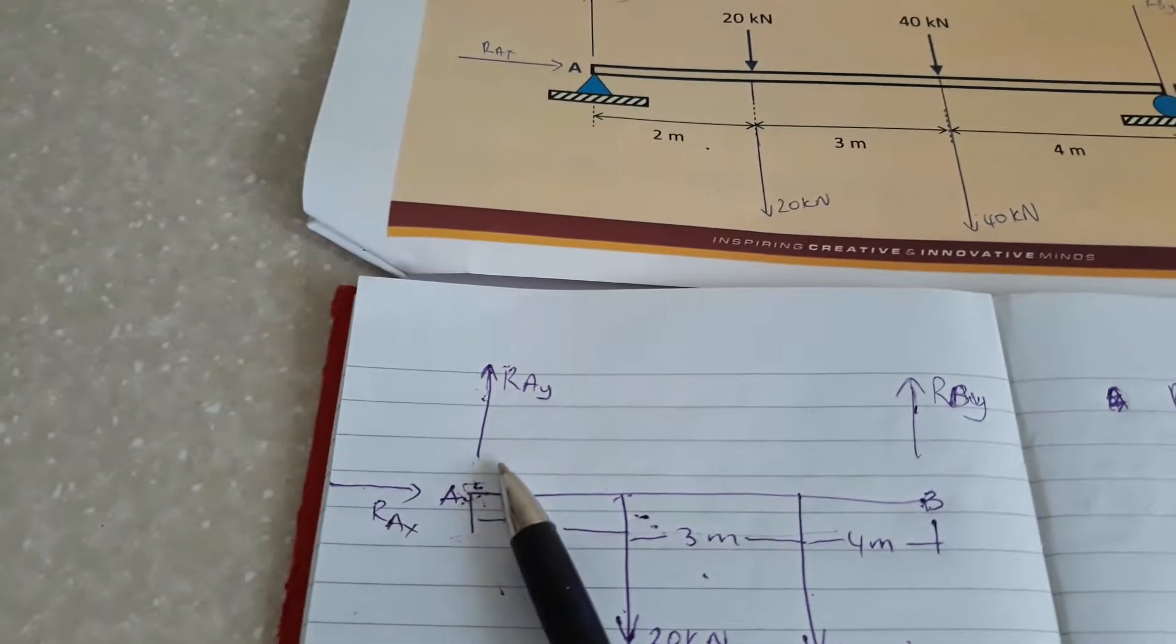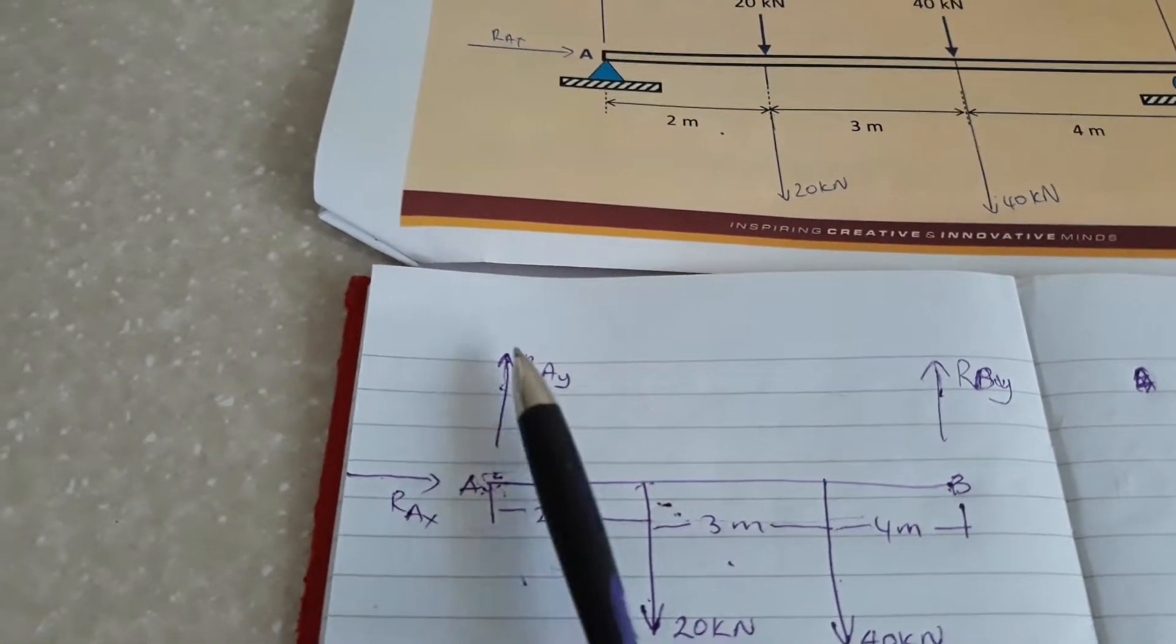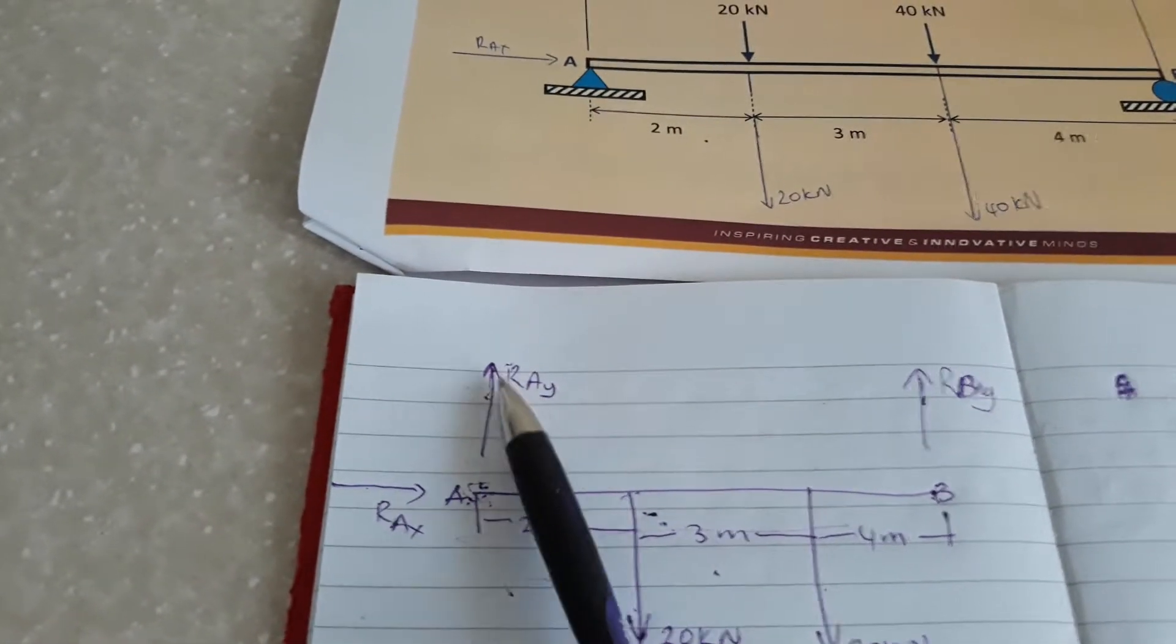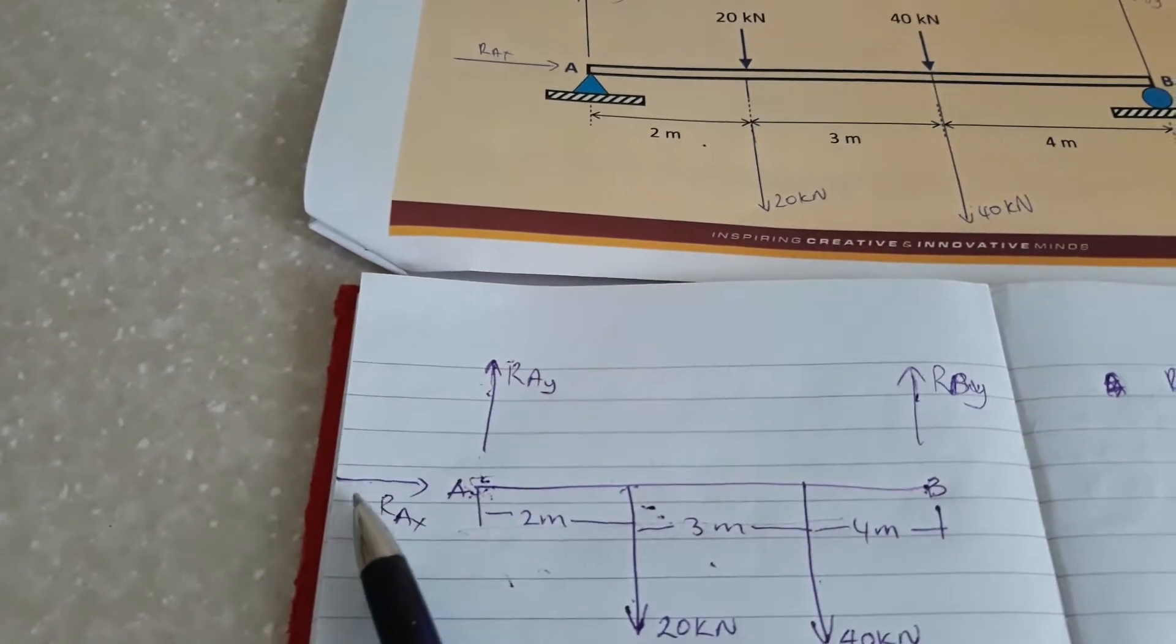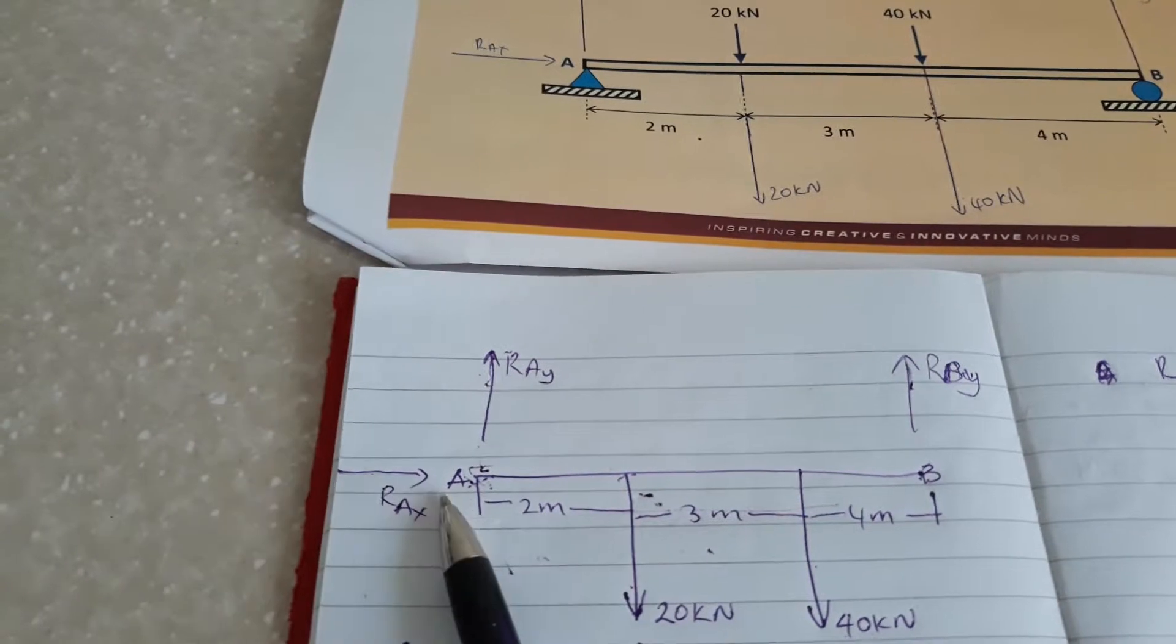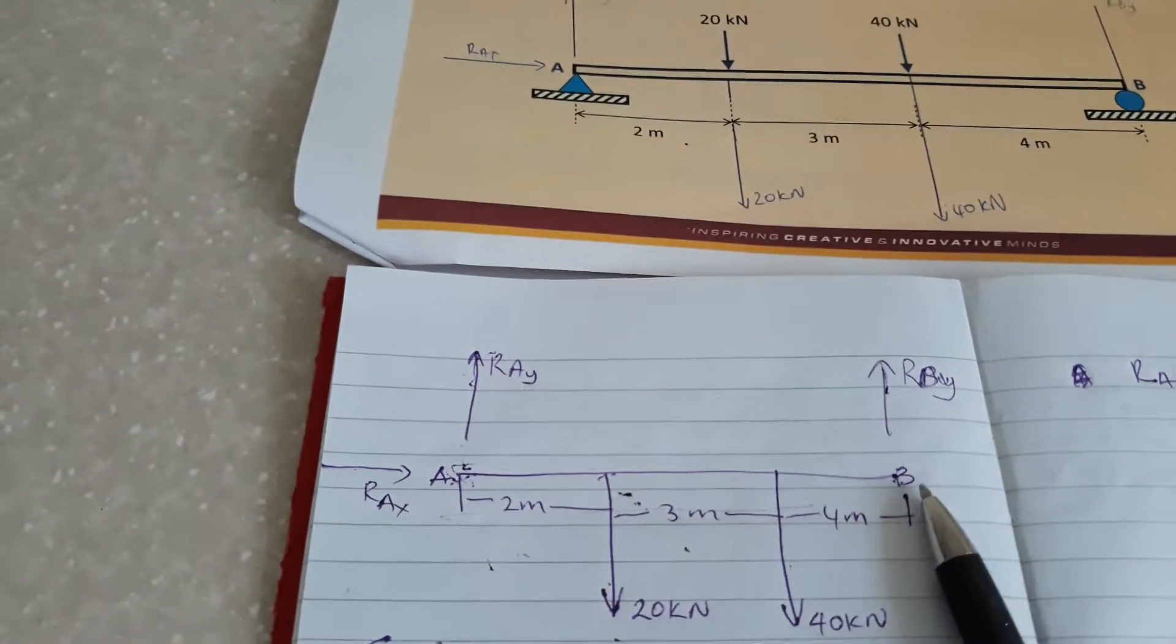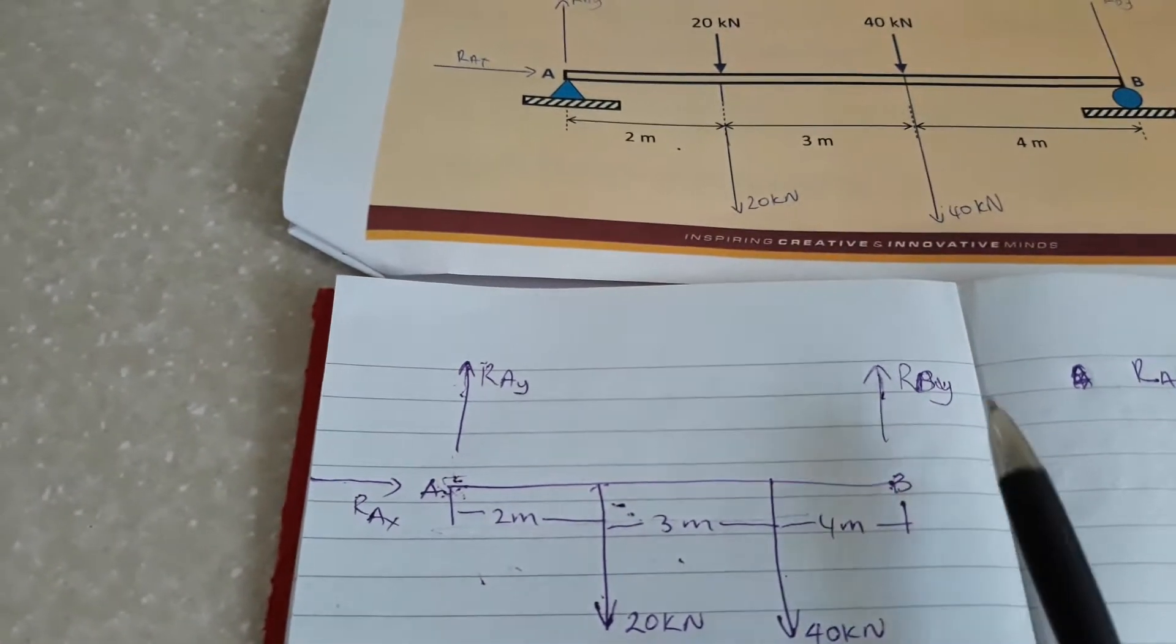As I said earlier, for point A you have reaction in two directions because it's a pin support. This represents reaction in the y direction and this arrow represents reaction in the x direction.